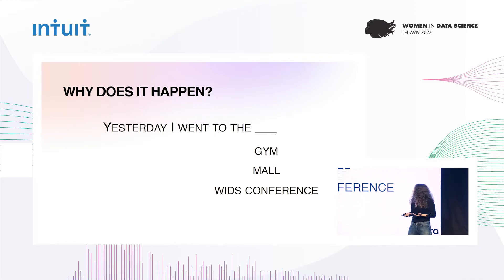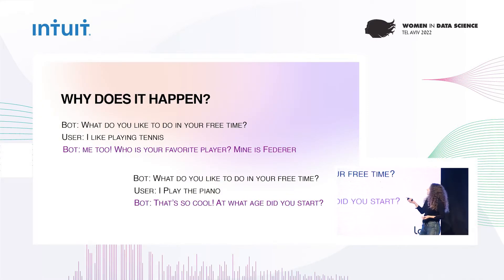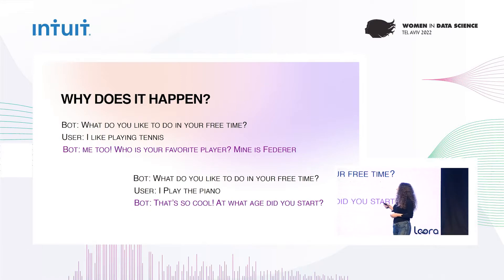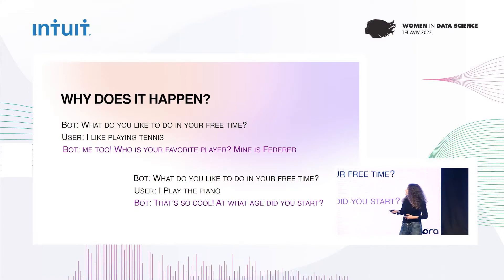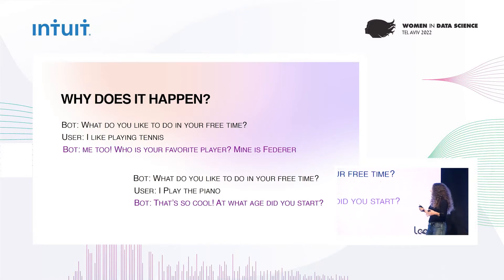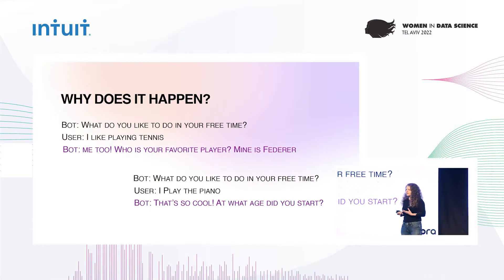If we look at a few examples here — these are two conversations about hobbies. In the first one, the user says 'I like playing tennis,' and then the bot says 'oh me too, who's your favorite player? Mine is Federer.' In the second example, the user says they like playing piano, and the bot says 'oh that's so cool, what age did you start?' These are both examples of good, interesting responses that stay on topic.